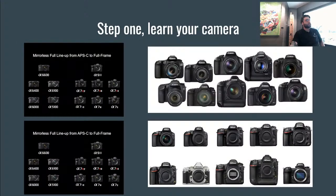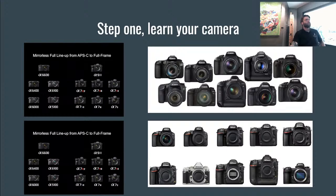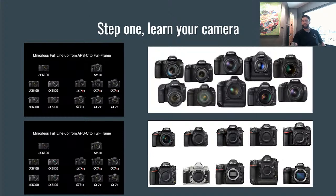Step one — very similar to our beginner's class but going into intermediate — learn your camera. There are a slew of different cameras: Sony has 12 different models currently, and Canon and Nikon each have easily 10 or 12 different cameras. Know which camera you're getting and research it before you purchase. Make sure it fits all your needs. If a point and shoot works for you, go with that. If you're within a budget, look for the best features within that budget — but always learn your camera first.